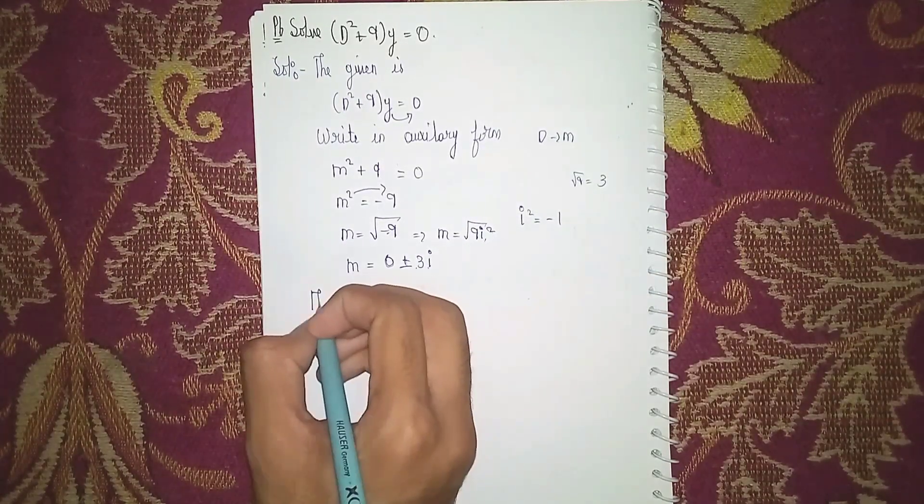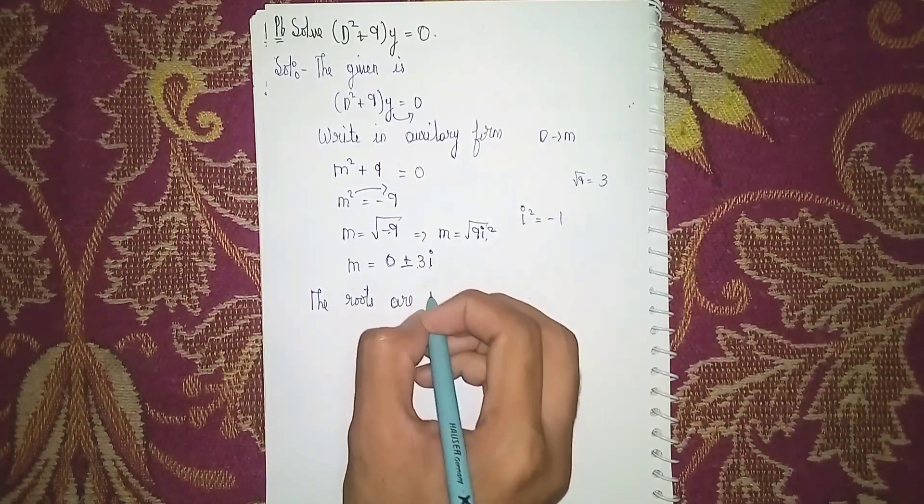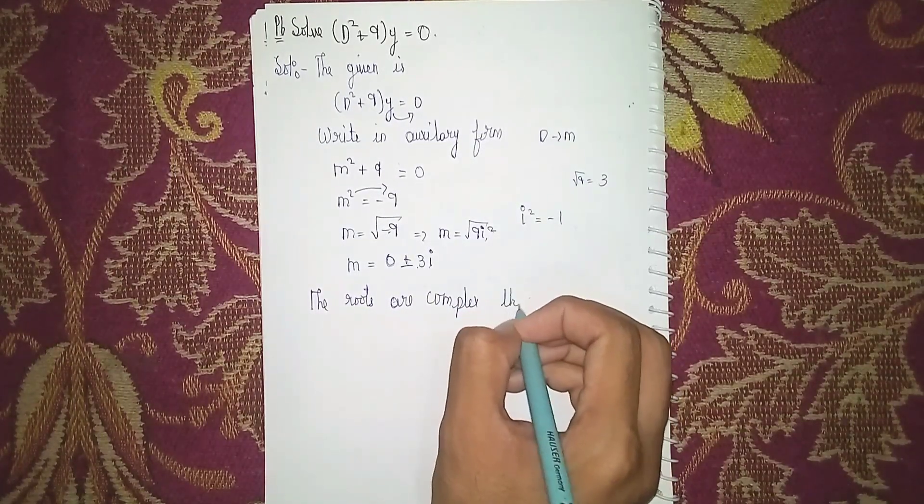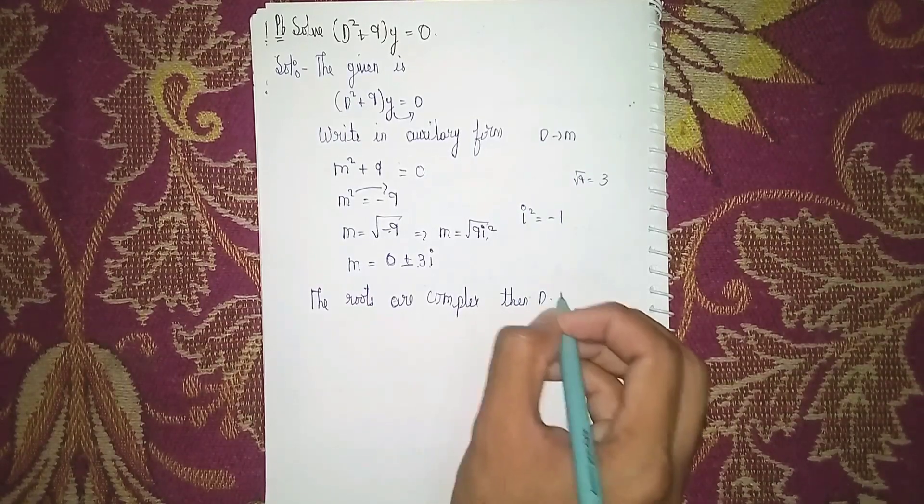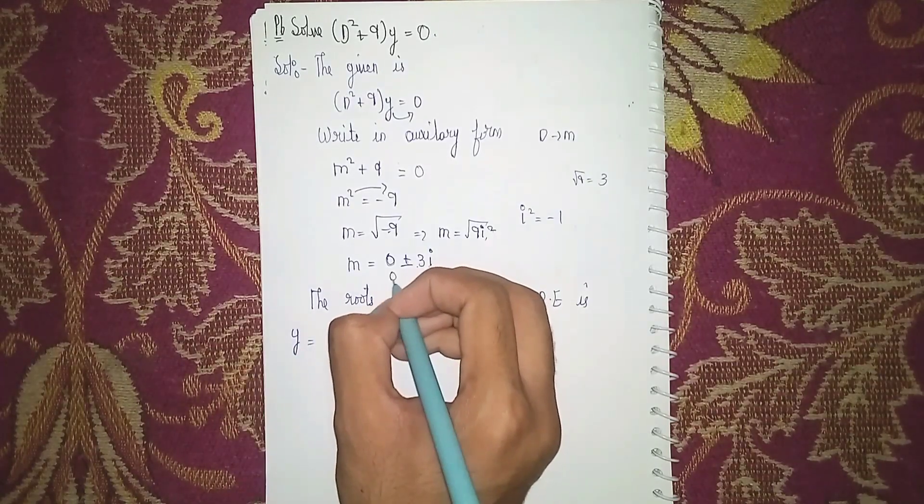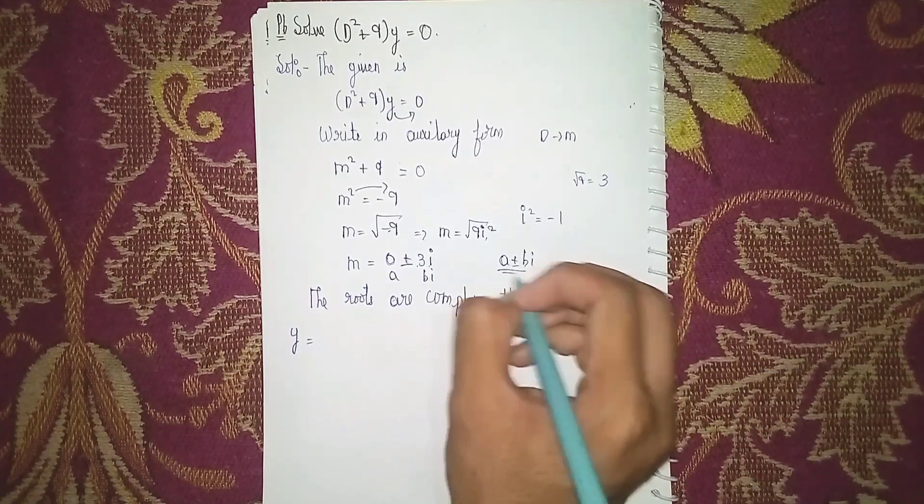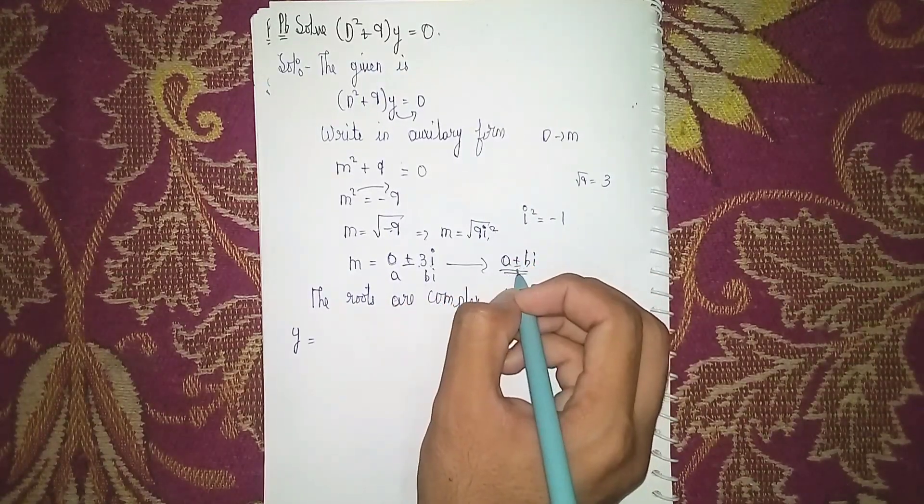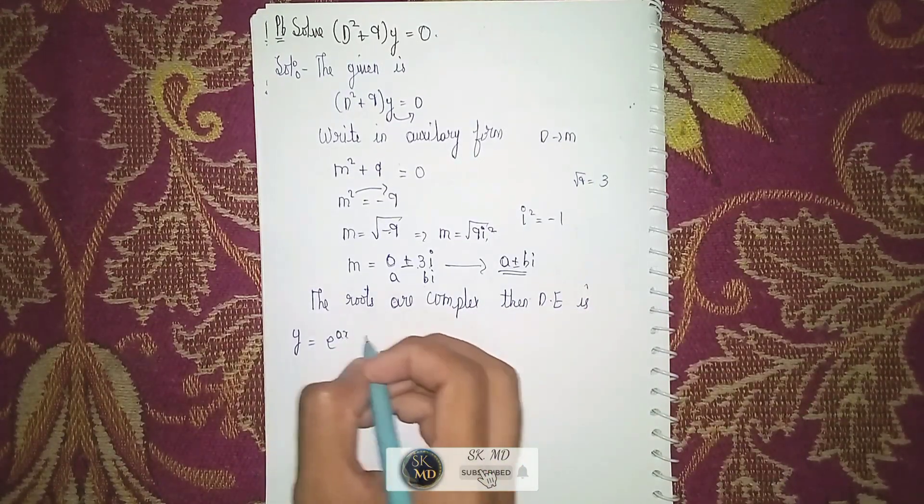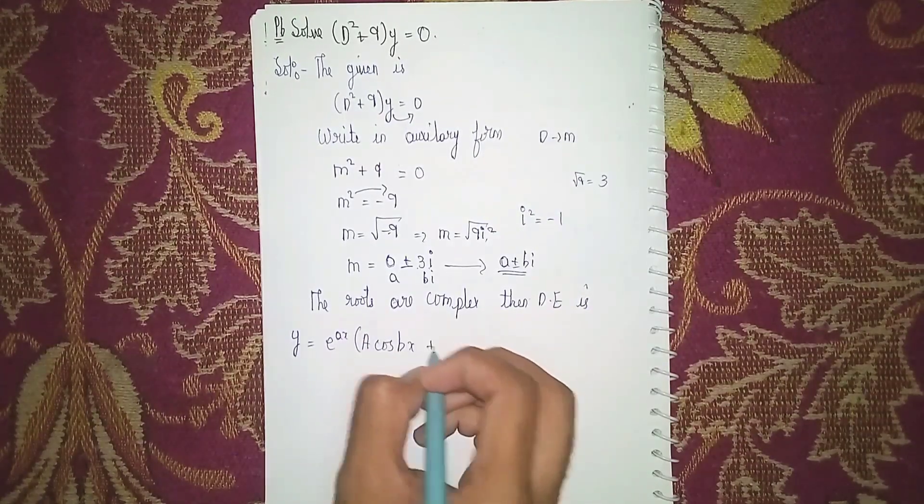The roots are complex. When the roots are complex, then the differential equation is y equals... This is a and this is b, in the form of a ± bi. So we know y = e^(ax)(a cos bx + b sin bx).